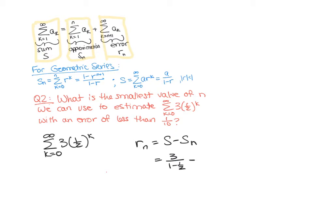S sub n in general is going to be our a value, so three, times one minus our rate, which is a half, raised to the n plus one, divided by one minus a half. Now we need to simplify this a little bit. The first term is six and in the second term we can pull out a six, and we're left with a one minus one half to the n plus one.